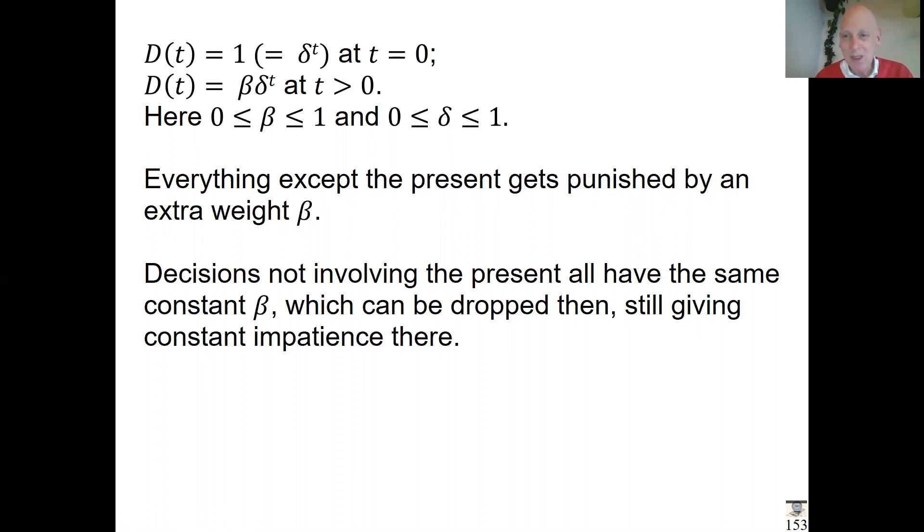If the present is not involved, then all the time points are hit by the same beta and it drops from the equations. In fact, nothing is happening whenever the presence is not involved—this is just constant discounting. Only if the presence is involved does the present get privileged relative to all the others. The formula is very simple—just one beta term, only the present—very simple but capturing the main thing.